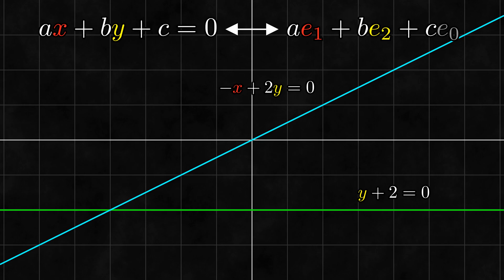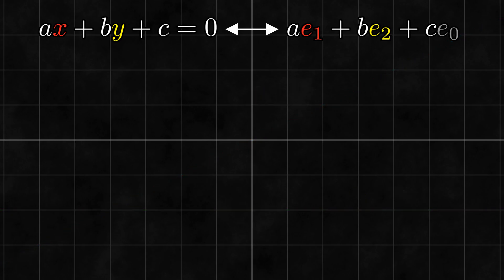Using them, we can write the horizontal line as e2 plus 2e0 and the slanted line as negative e1 plus 2e2. Let's look a little more at these three basis vectors. Since they're vectors in the linear space of lines, they should each represent a line. What lines do they represent?